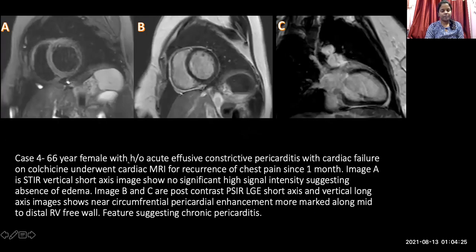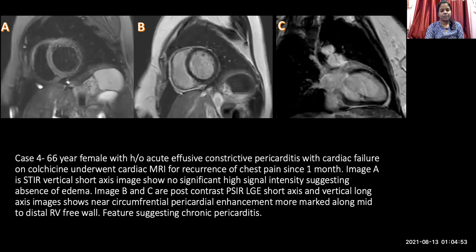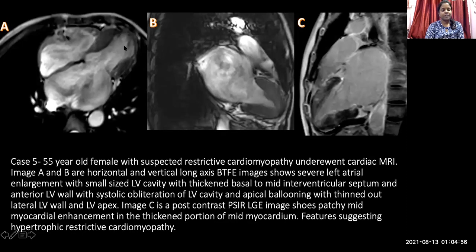A 66-year-old female with a history of acute-on-chronic constrictive pericarditis presenting with cardiac failure on colchicine treatment underwent cardiac MRI for recurrence of chest pain over one month. Image A is the STIR image showing no high signal intensity, suggesting absence of myocardial edema and indicating a chronic event. The B and C post-gadolinium enhancement images show circumferential pericardial enhancement, more marked along the right ventricular free wall, suggesting chronic pericarditis.